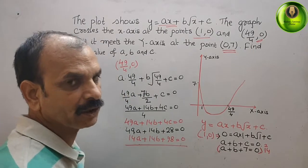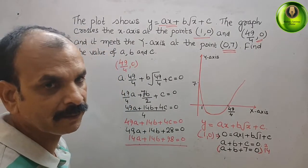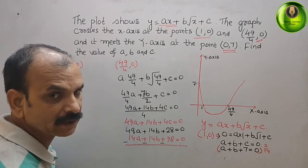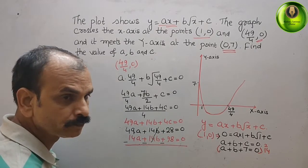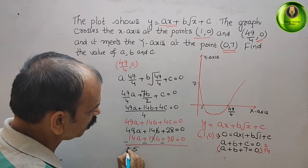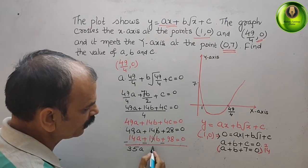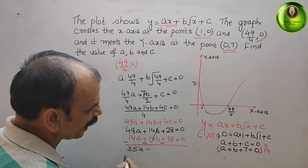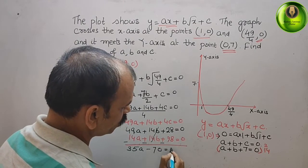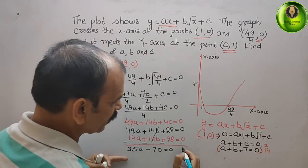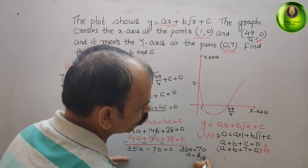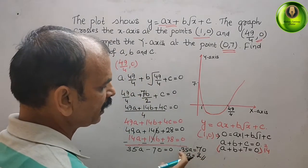Subtracting the new equation from equation 2, we change all signs of the multiplied equation and add. The b terms cancel. We get: (49 - 14)a + (28 - 98) = 0, that is 35a - 70 = 0. Solving: 35a = 70, so a = 70/35 = 2.